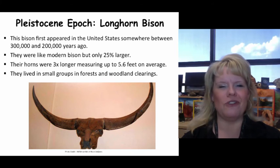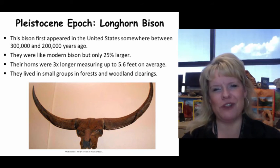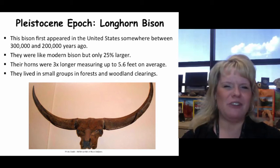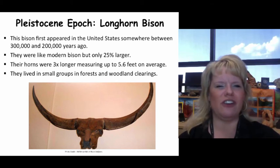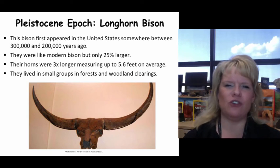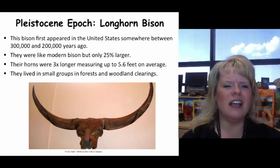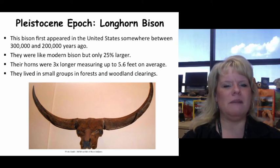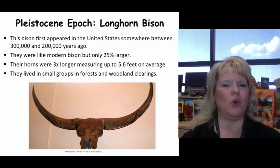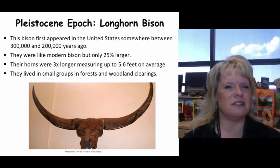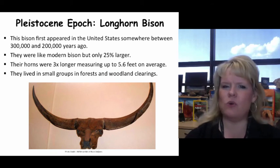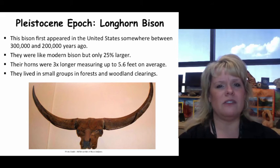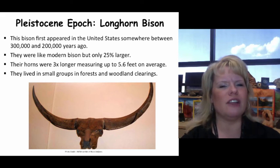One of the noteworthy animals of the Pleistocene grasslands was the longhorn bison. They first came to the United States somewhere between 300,000 and 200,000 years ago, probably closer to the 200,000-year marker. They were like modern bison but with about 25% more body mass and horns three times longer — each horn being almost six feet long. They lived in small groups and would have lived in forests, not giant herds like modern bison today.